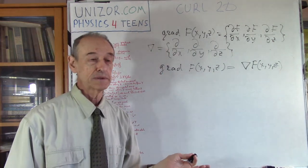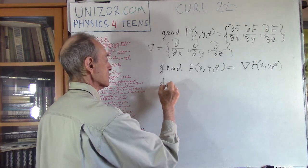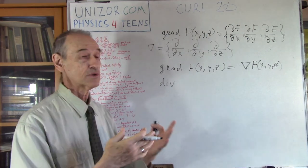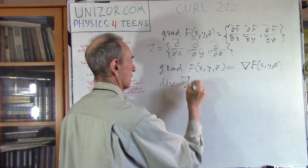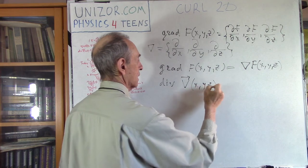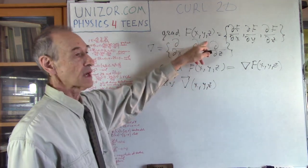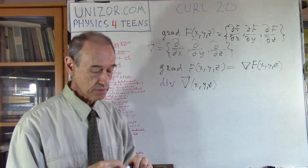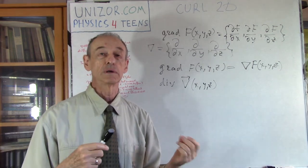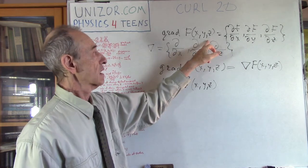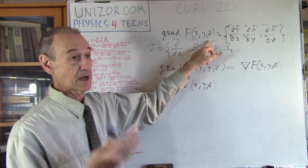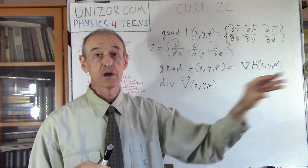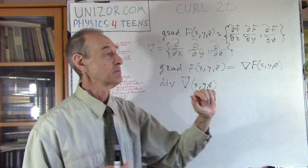The second concept we were introducing was divergence of a vector field. In some way it's a reverse operation, because from a scalar field we got a vector, and with divergence, from the vector we get the scalar field. We were using the concept of air density and the wind — if this is air density, it's basically higher pressure, which means it's the source of the wind.